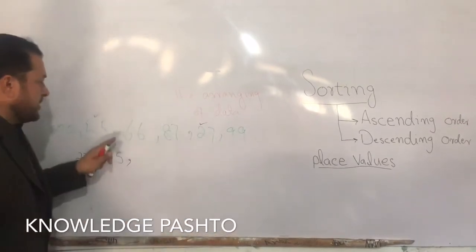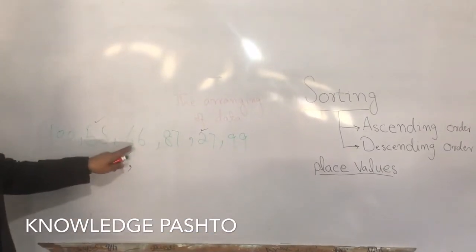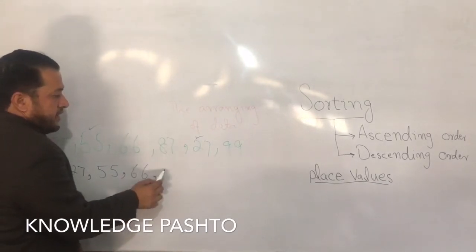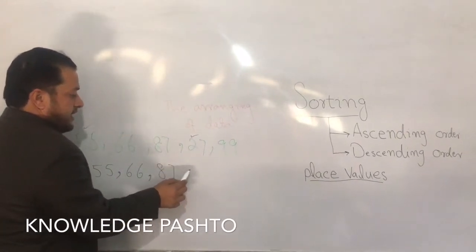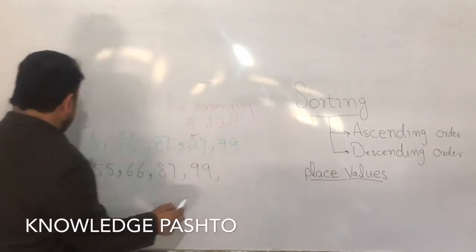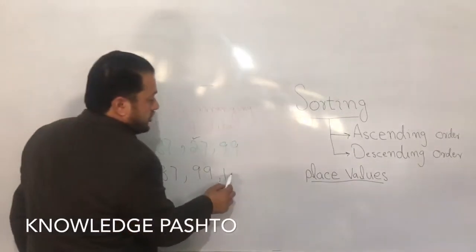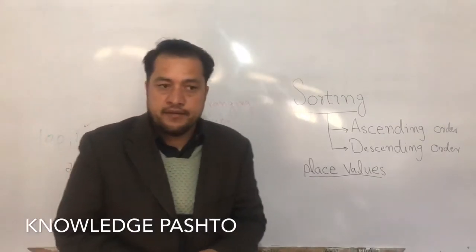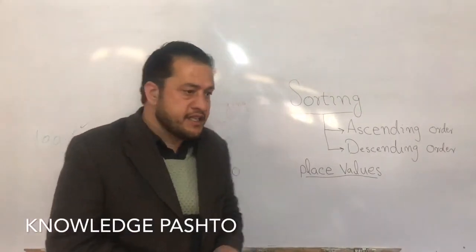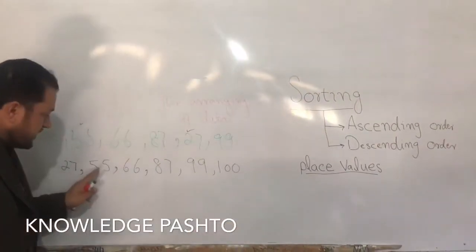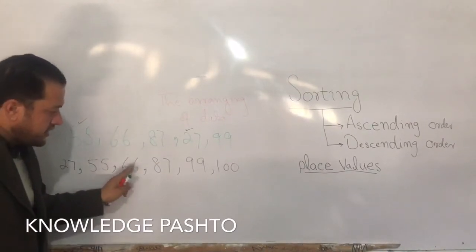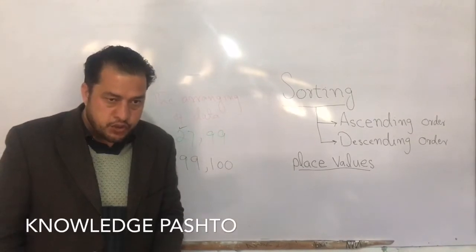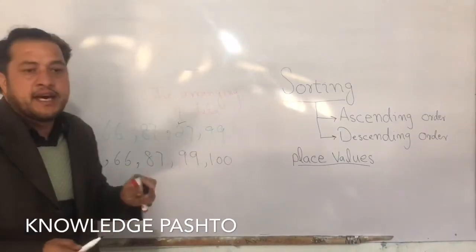What are the numbers? 66, 87, 99, and 100. Here we can do the sorting option. We can go ascending — that is increasing order. Or we can go descending.